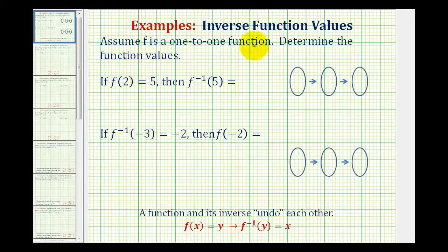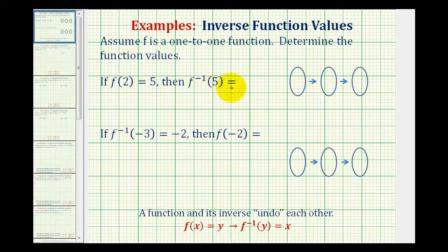We will assume f is a one-to-one function, meaning it has an inverse function. We want to determine the function values. If f of two equals five, then f inverse of five is equal to what output? The main thing to remember about these problems is a function and its inverse undo each other.